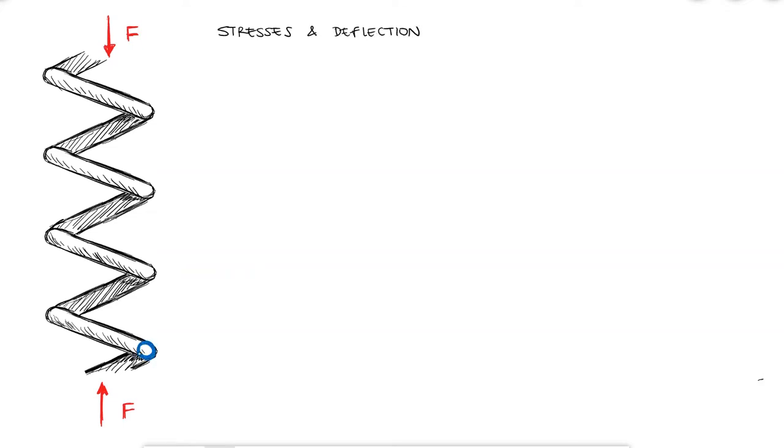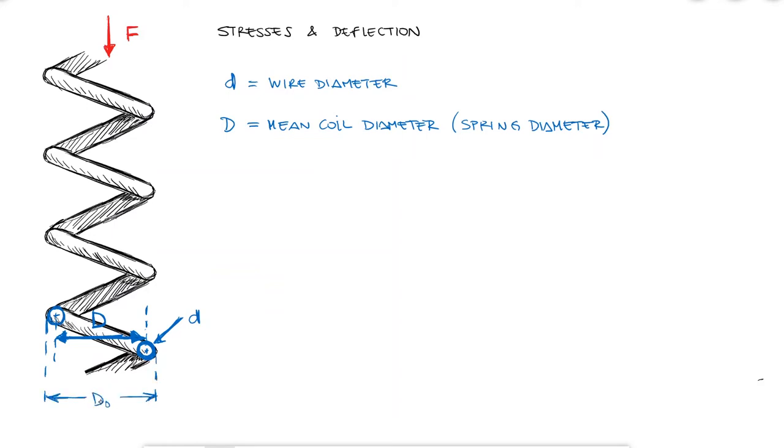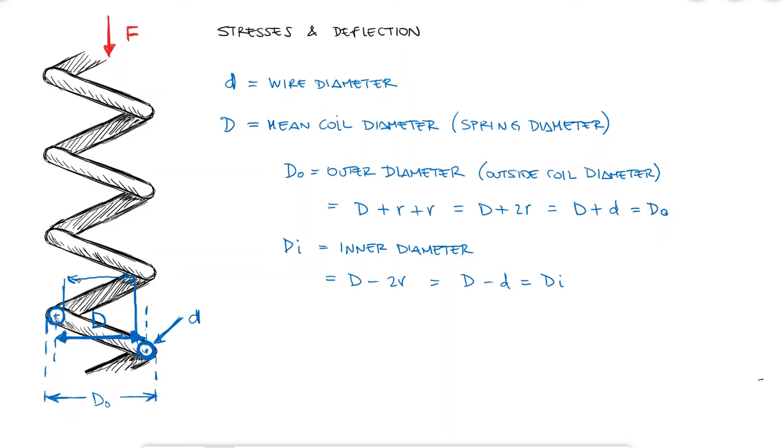If we look at a spring made with a wire of diameter lowercase d, and we define that the spring diameter, or mean coil diameter capital D, goes from the center of the wire from one side to the other, we can define two dimensions that will be important later on. The outer diameter will be equal to capital D plus one wire diameter lowercase d. In the same way, the inner diameter will be equal to capital D minus a radius on each side, or D minus d.